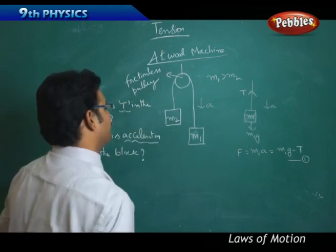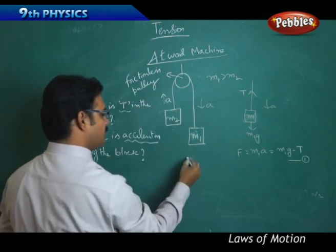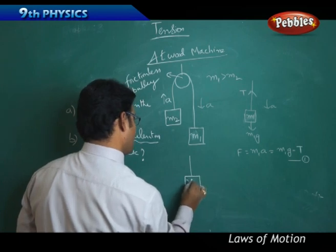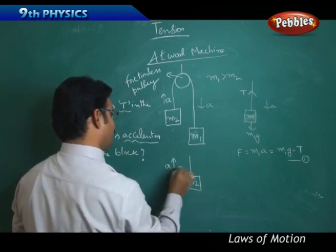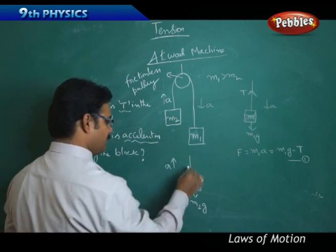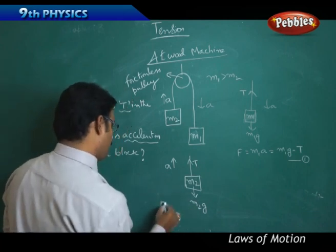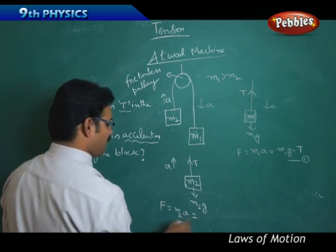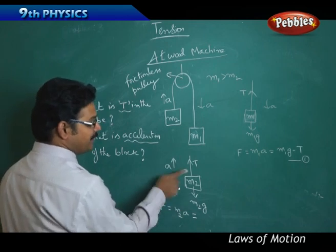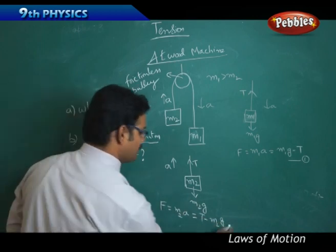Now take the M2 part, which is moving upward, so it has acceleration upward. Mass M2 has weight M2×g acting downward and tension T acting upward. By Newton's second law, force equals M2×a. Since acceleration is upward, tension is greater than M2×g. So the resultant is T minus M2×g, giving us: T − M2·g = M2·a. This is Equation 2.